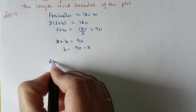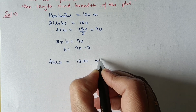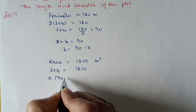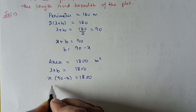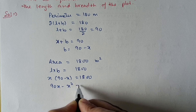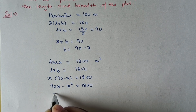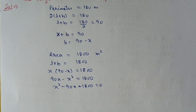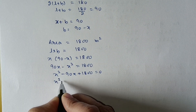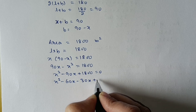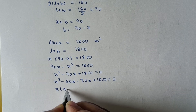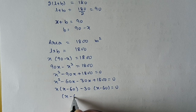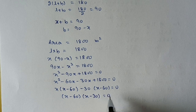Using area = length × breadth = 1800: x(90 - x) = 1800, so 90x - x² = 1800. Rearranging: x² - 90x + 1800 = 0. Factorising with factors 60 and 30: (x - 60)(x - 30) = 0.